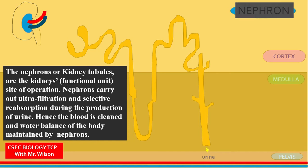If you think of a motor car, the functional unit would be the engine which provides the energy for the car to move. If you think about a country, that major city that drives commerce — for Jamaica it would be Kingston — that would be the functional unit for Jamaica.